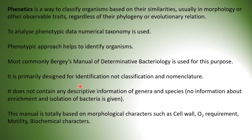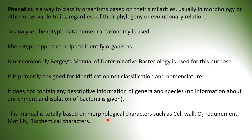It is primarily designed for identification and not classification and nomenclature. Identification, classification, and nomenclature are separate terms in taxonomy, but they are interrelated. Here we are just going to identify the isolate. It does not contain any descriptive information about genera or species, and no information about the enrichment or isolation of bacteria is given. However, other information — like whether it is gram positive or gram negative, which biochemical tests it gives positive results for, and colony morphology — is given. This manual is based on morphological characters such as cell wall, oxygen requirement, motility, and biological characters. For phenetics, remember Bergey's manual of determinative bacteriology.